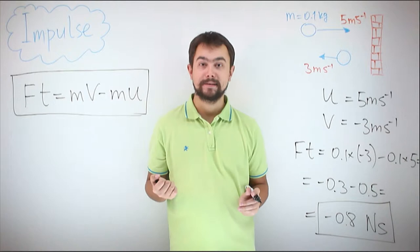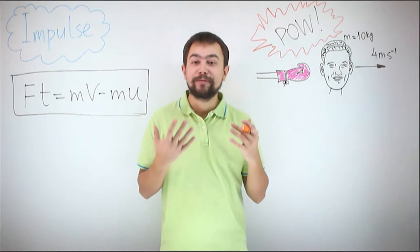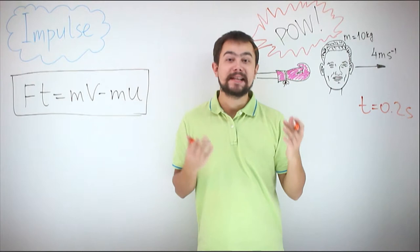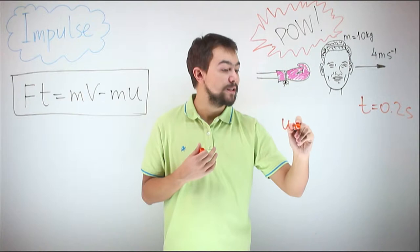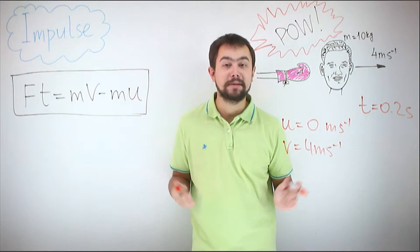Another example. A guy gets punched in the face, and his head flies backwards with a velocity of 4 meters per second. We need to find the force of the punch, given that the punch lasted for 0.2 seconds. His head was initially stationary, so his initial velocity was 0. His final velocity is 4 meters per second, and the mass of his head is 10 kilograms.